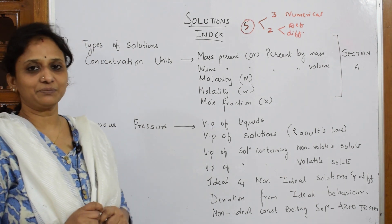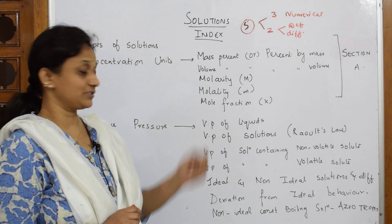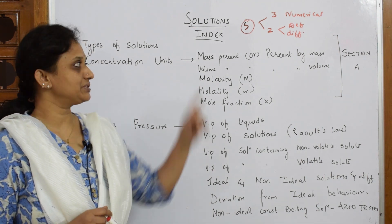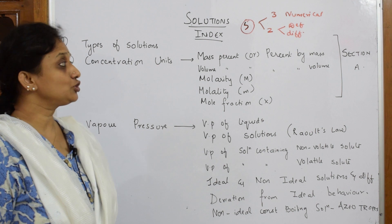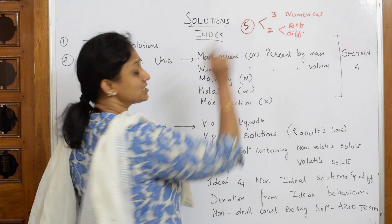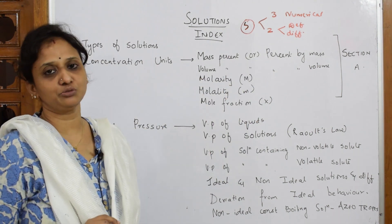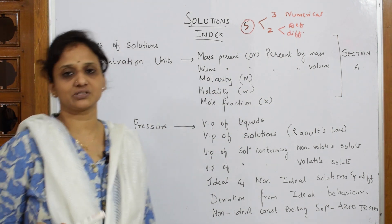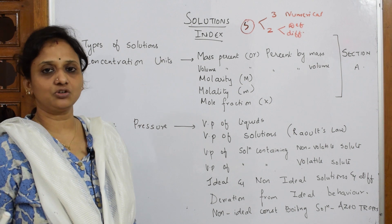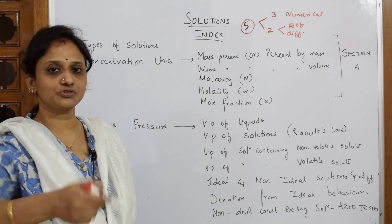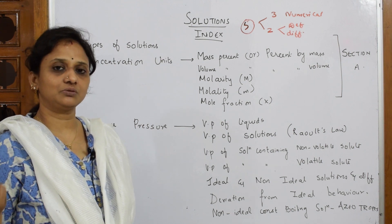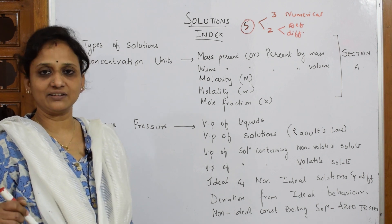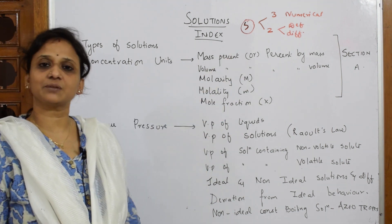Some students have asked me to upload this chapter, so I've started with it. In the Solutions chapter, the weightage for your board exam is five marks. In those five marks, you will be given three marks for a compulsory numerical in Solutions, and the leftover two marks may be asked as definitions, differences between ideal and non-ideal solutions, osmotic pressure, abnormal molar mass, or Raoult's law and Henry's law.